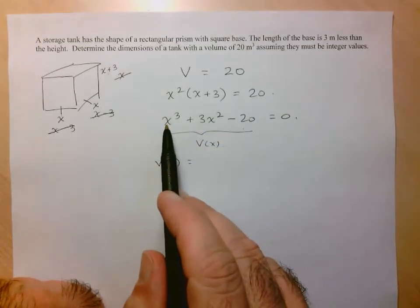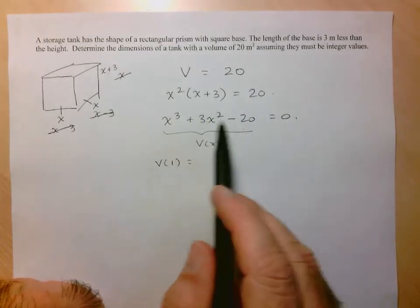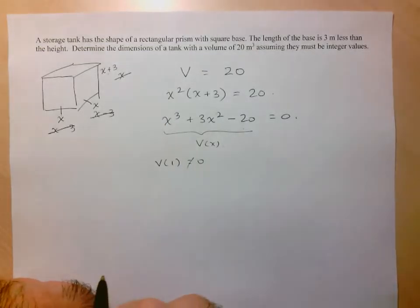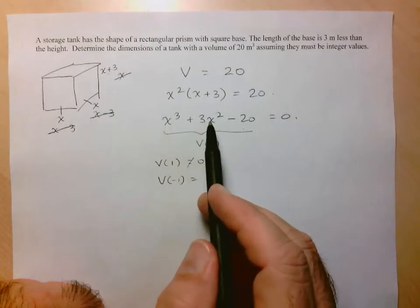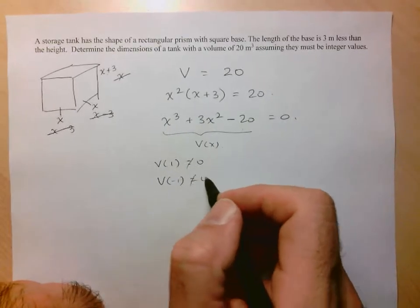Check out the factors of 20. So I'll start with 1 and negative 1, so I put V at 1. Here 1 plus 3 is 4, minus 20, not equal to 0. Negative 1, so this is going to be negative 1, plus 3 is 2, minus 20, not equal to 0.